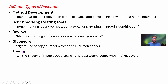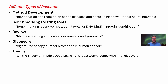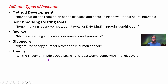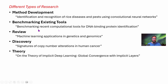Finally, we have theory papers. Theory papers don't normally have experiments — they are typically proofs, mathematics, probability, statistics, those kinds of things. If you are really into mathematics, this is for you. For example, a paper on the theory of implicit deep learning — global convergence with implicit layers — that's a theory related to deep learning. Now, with your supervisor you need to chalk out which type of paper or research you are going to undertake.